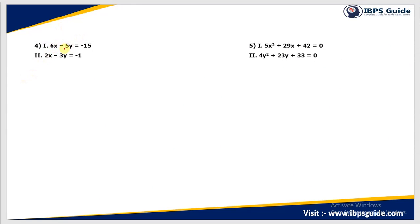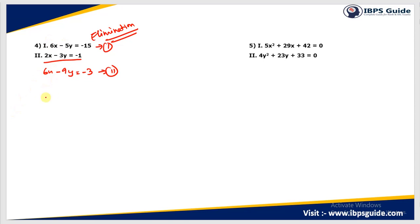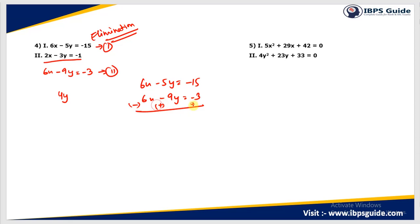This question has linear equations. We have 6x − 5y = −15. We will use the elimination method — eliminating one variable to find the other. Multiplying the second equation by 3 gives 6x − 9y = −3. Taking the difference: 6x cancels out, leaving +4y. The right side becomes −15 − (−3) = −12. So 4y = −12, giving y = −3. Substituting y = −3 back: −5 × (−3) = +15 goes to the other side as −15, giving −10 ÷ 2 = −5. So x = −5 and y = −3, meaning y is greater than x.